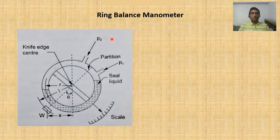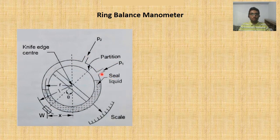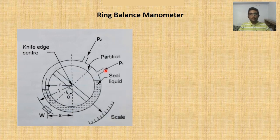Now considering the first instrument — the ring balance manometer. It consists of a tubular-shaped cross section with a partition that prevents the two pressures from mixing. Pressures P1 and P2 are applied from two input ends, and a fluid — which may be kerosene or water — is filled inside. This instrument measures differential pressure, which is the difference between two pressures. For example, if P1 is 1 bar and P2 is 5 bar, the differential pressure reading would be 4 bar.